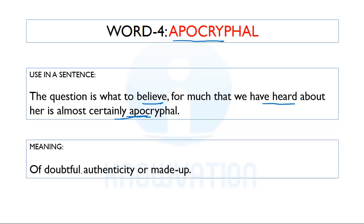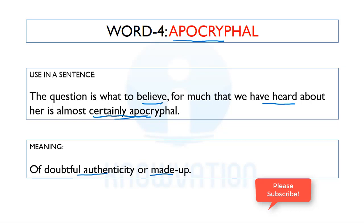The correct meaning of apocryphal is: of doubtful authenticity, or something that is made up. It is now very clear that the speaker is not able to believe what he is hearing because he thinks that whatever he has heard about someone is certainly apocryphal — that is, of doubtful authenticity or simply made up. I hope the meaning and sentence use are clear.